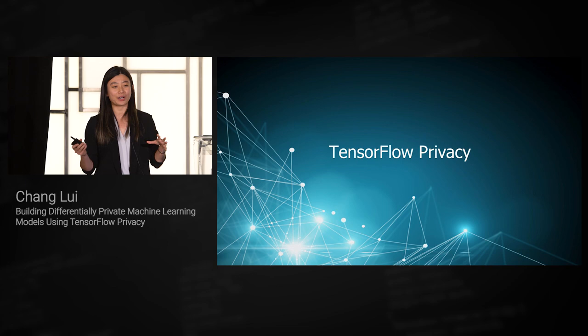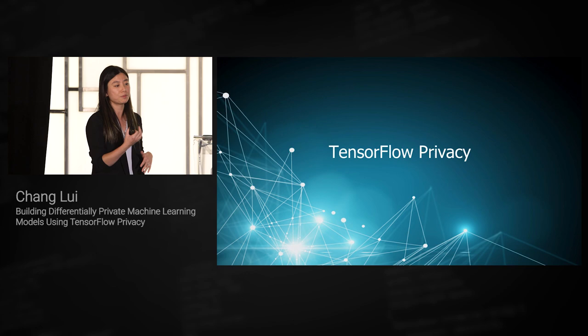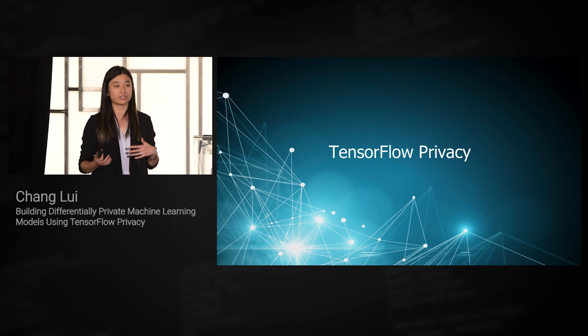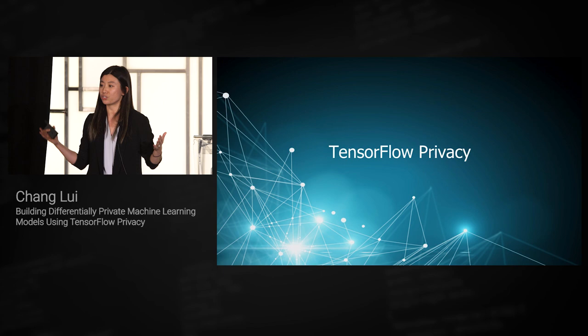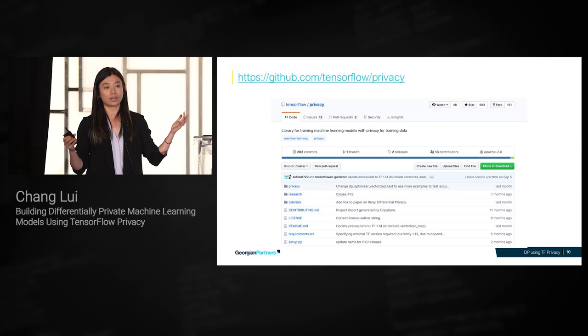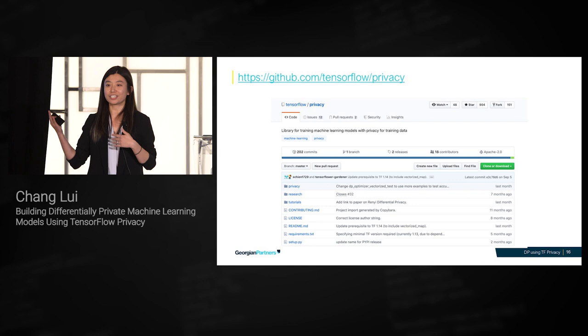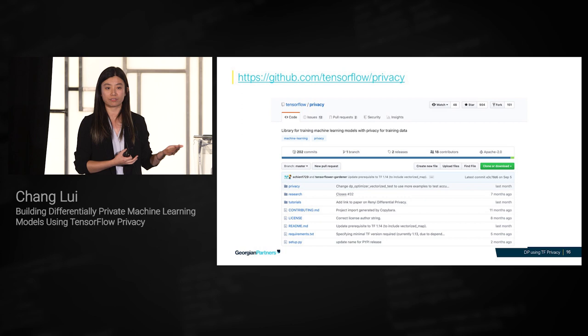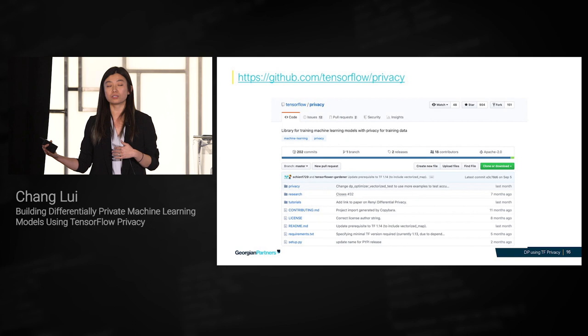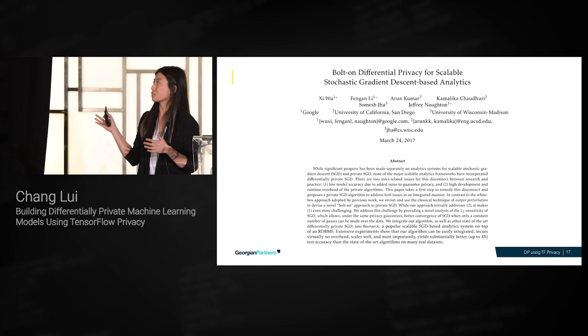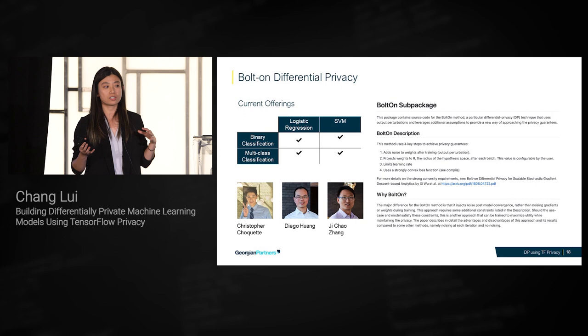With that high-level overview, let me quickly introduce TensorFlow Privacy. When you're building private machine learning models, you don't want to think too much about sensitivity of different algorithms. That's why we've built this package. The TensorFlow Privacy library is available as a sub-package under TensorFlow — you can check it out. There are multiple algorithms within this package applying differential privacy at different stages of your machine learning models. Today I'll focus on the bolt-on differential privacy sub-package.